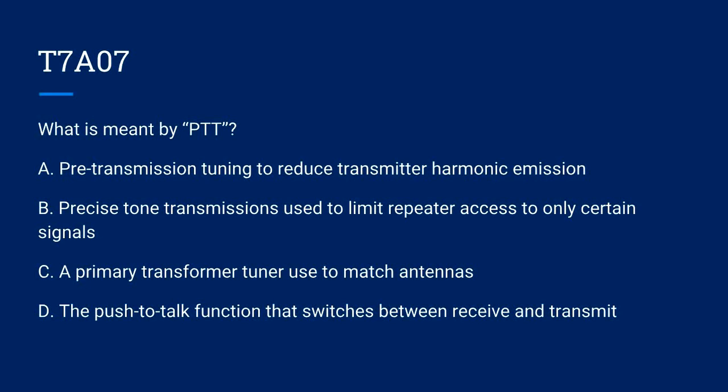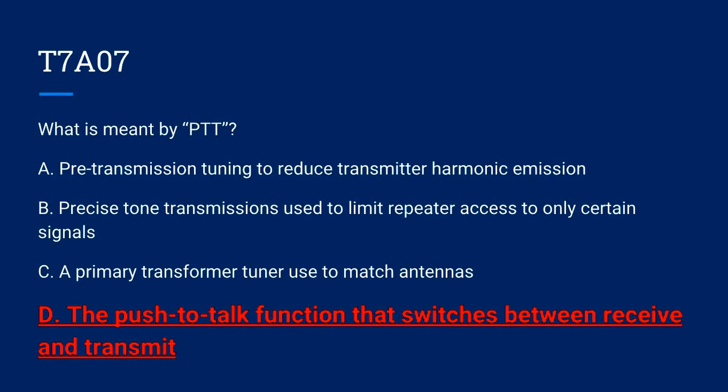T7A07. What is meant by PTT? A. Pre-transmission tuning to reduce transmitter harmonic emission. B. Precise tone transmissions used to limit repeater access to only certain signals. C. A primary transformer tuner used to match antennas. Or D. The push-to-talk function that switches between receive and transmit. The correct answer is D. The push-to-talk function that switches between receive and transmit.